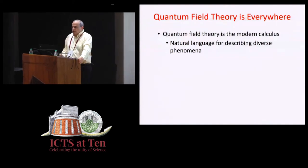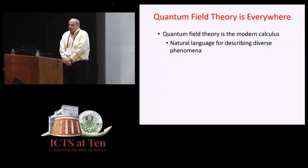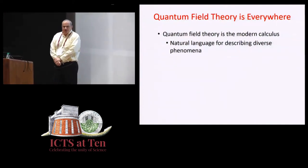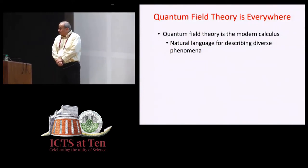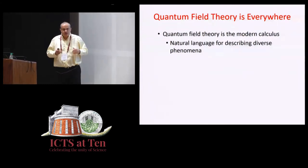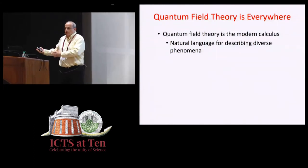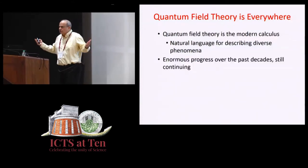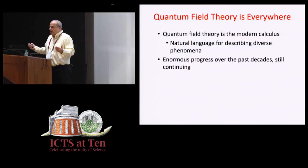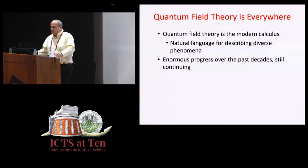So, continuing with quantum field theory is everywhere, it's really reminiscent of the story of calculus. We have some intellectual structure, which was invented for one purpose, describing a system with an infinite number of degrees of freedom, or a system which is both relativistic and quantum mechanical, and it has these applications everywhere. So it's the natural language to describe diverse phenomena.